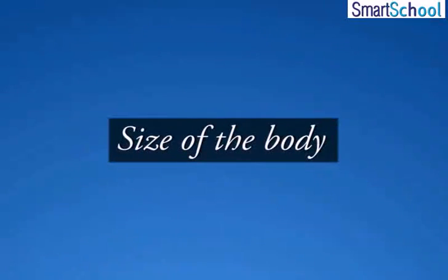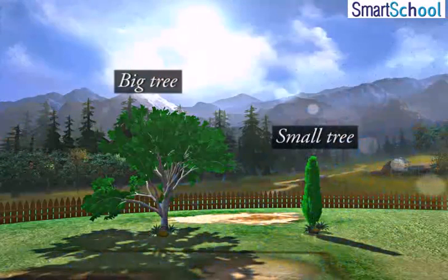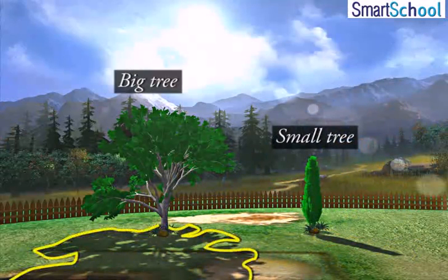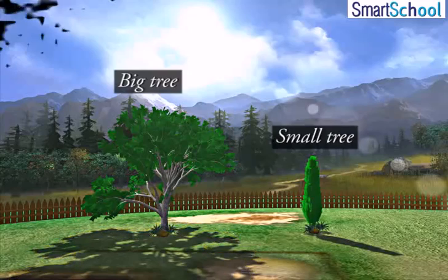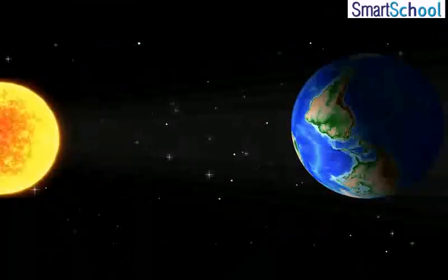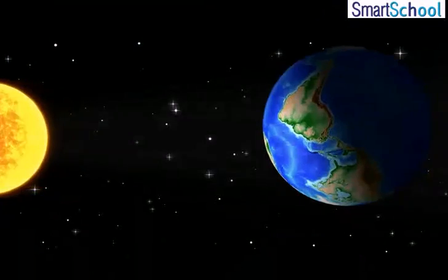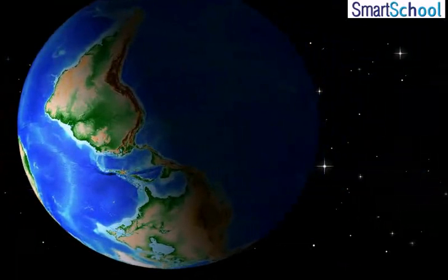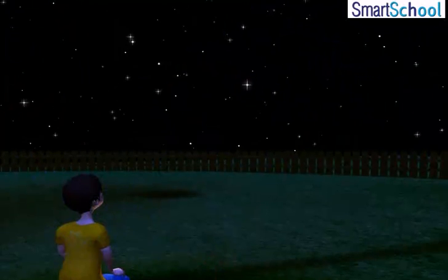Size of the body also affects the shadow. A small tree makes a small shadow, and a big tree makes a big shadow. When the earth blocks the sun's light from reaching the sky above, the whole sky above us appears dark.